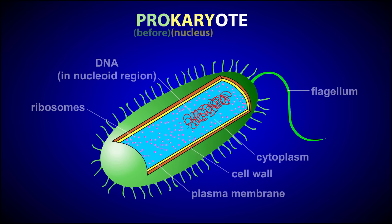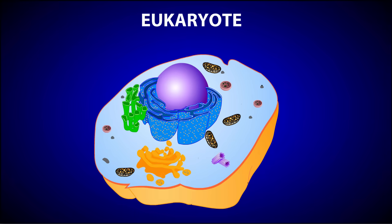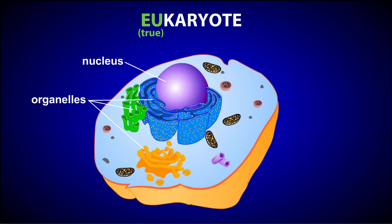In contrast, eukaryotic cells contain a membrane-bound nucleus and other membrane-bound organelles. The name eukaryote also gives a hint about its structure. 'Eu' means true, and 'karyo' means nucleus. So in essence, the word eukaryote means 'true nucleus.'